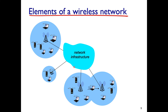Let's look at the elements and components of a wireless network. Whether wireless or not, you need a network infrastructure — data centers with switches and so on. Users connect to this infrastructure through wireless cells. Let's look at what the components inside a wireless cell are.